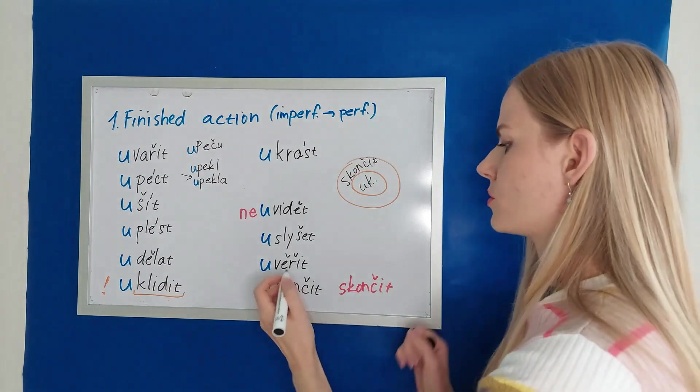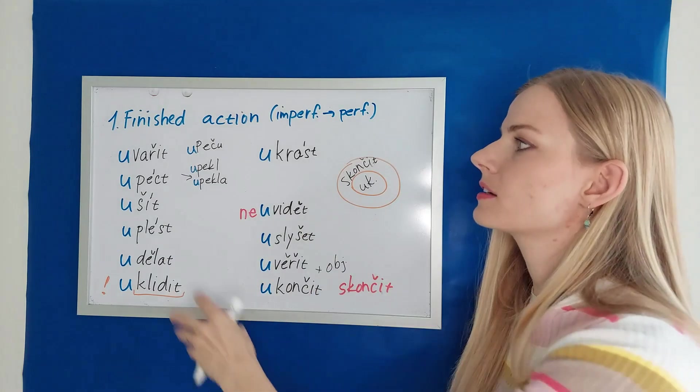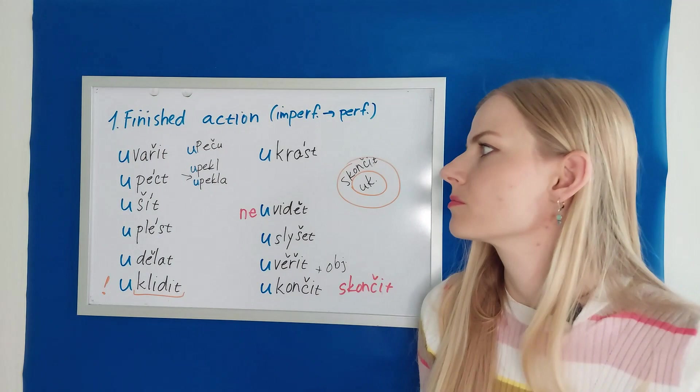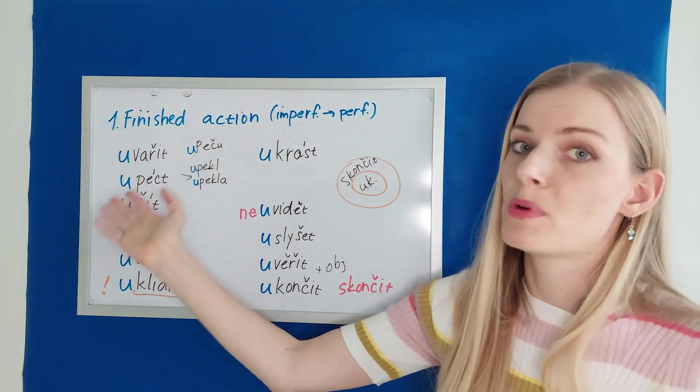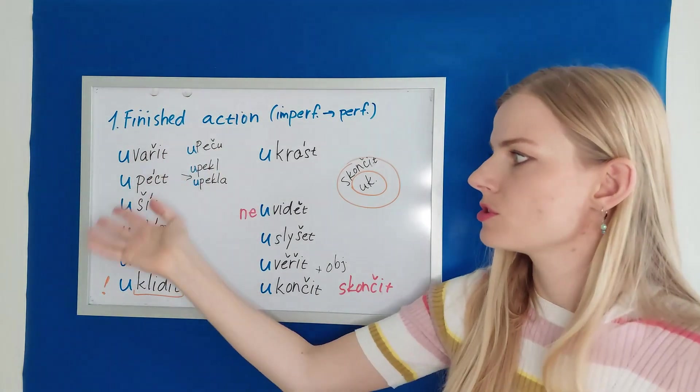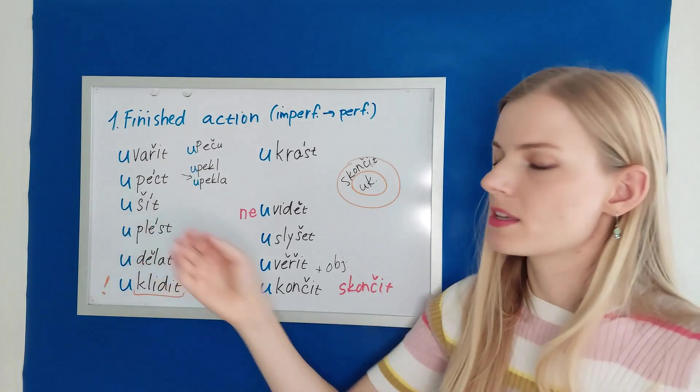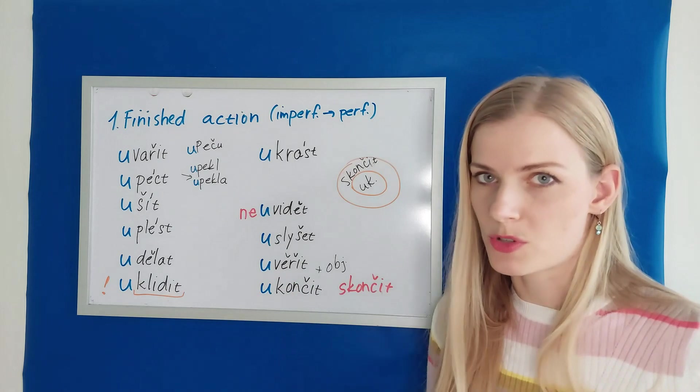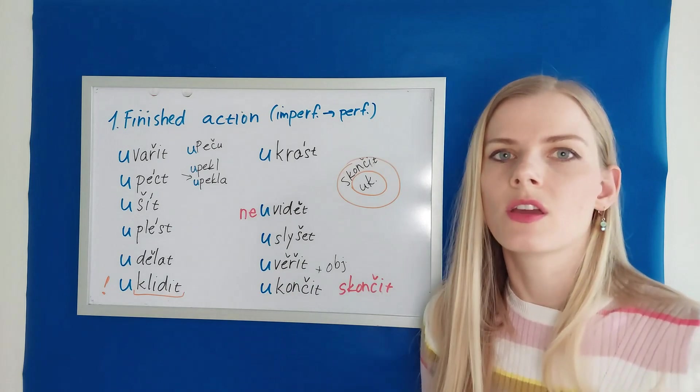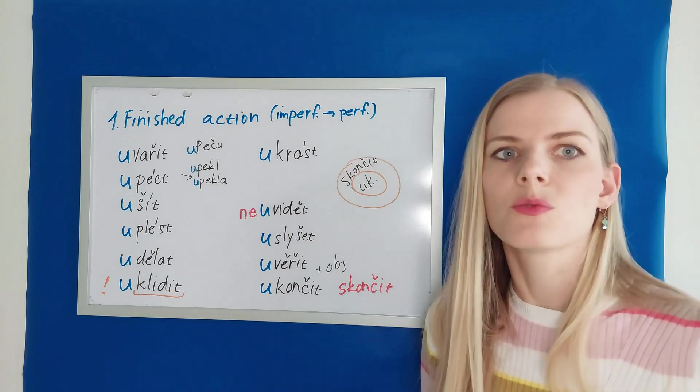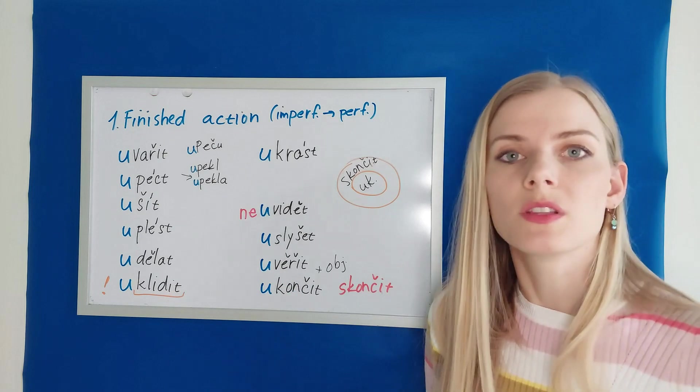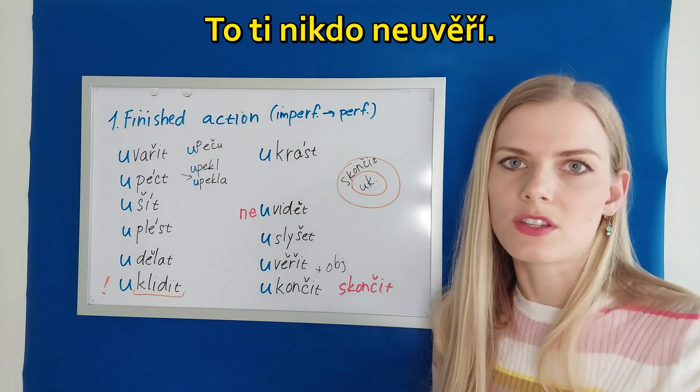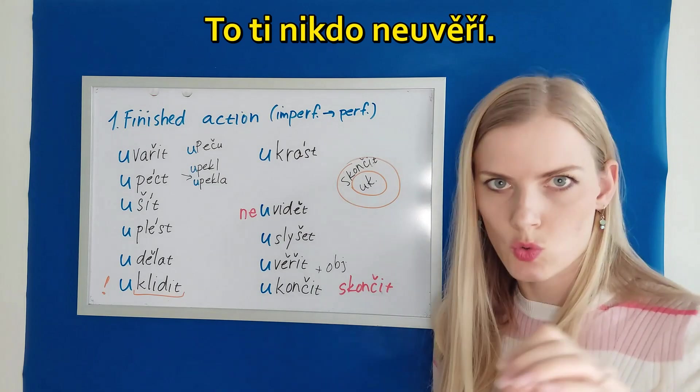Ukončite prosím výstup a nástup. And skončit can both have an object and we can also talk about something finishing on its own. Film skončil. Skončit has a wider meaning. Ukončit has a more specific meaning. And remember, ukončit has to have an object. In fact, all these verbs usually require an object. Uvařit polévku. Upéct chlebíček. Ušít šaty. Uvěřit also has to have an indirect object. Uvěřit někomu. To believe to someone. That's the dative case. To ti nikdo neuvěří.